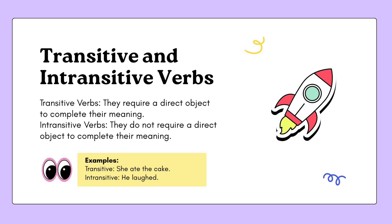Transitive and intransitive verbs are easy to understand. Transitive verbs require a direct object to complete the sentence. For example: 'She has eaten the cake' — a direct object is necessary to clarify the meaning. Intransitive verbs do not require a direct object to complete the meaning. For example: 'He laughed' — no object is needed; the sentence is already complete.